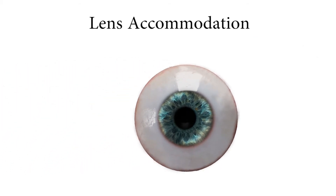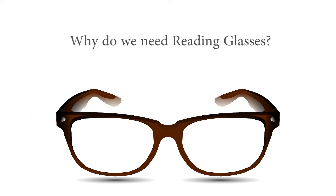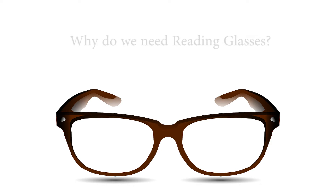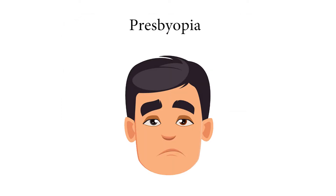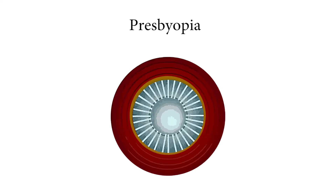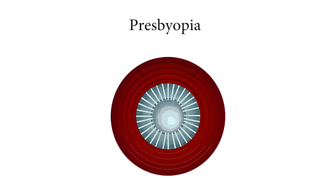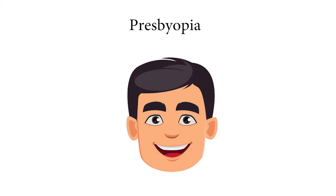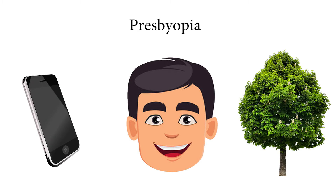This entire process is called lens accommodation. So why do we need glasses as we approach our 40s and 50s? As we grow older, objects that are close tend to become harder to focus on. This is called presbyopia. As we age, our lens becomes stiffer, and this stiffness makes it harder for our ciliary muscles to change the lens shape.